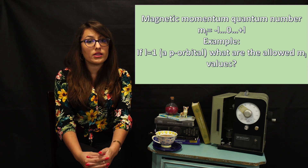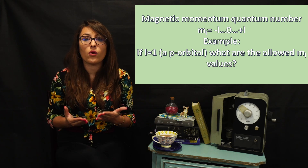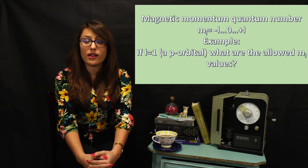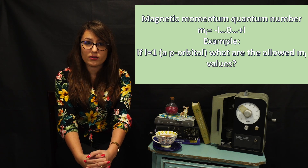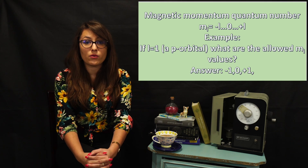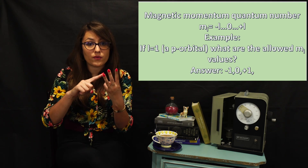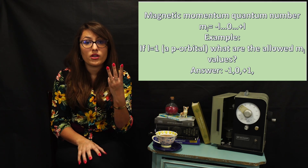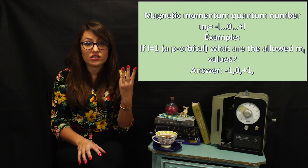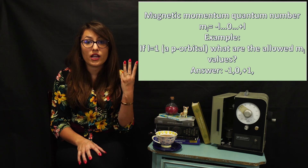Let's do another one. Let's say we had a p orbital, so l = 1. ml would then be equal to −1, 0, and +1. So it has three different orientations in space and can hold a maximum of six electrons, because each individual orientation can hold two electrons.